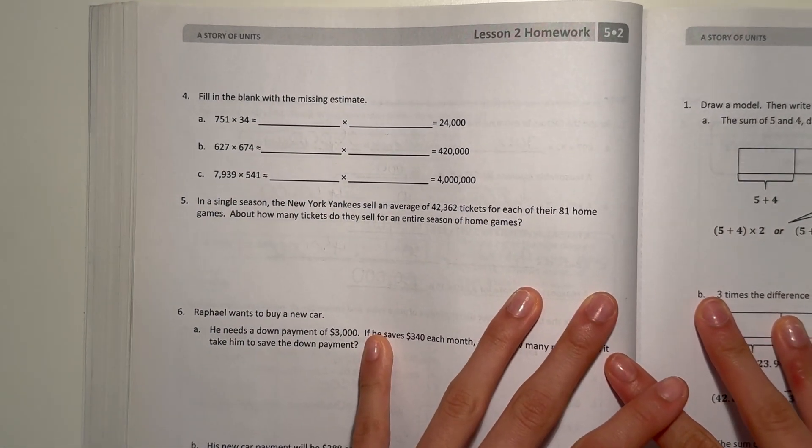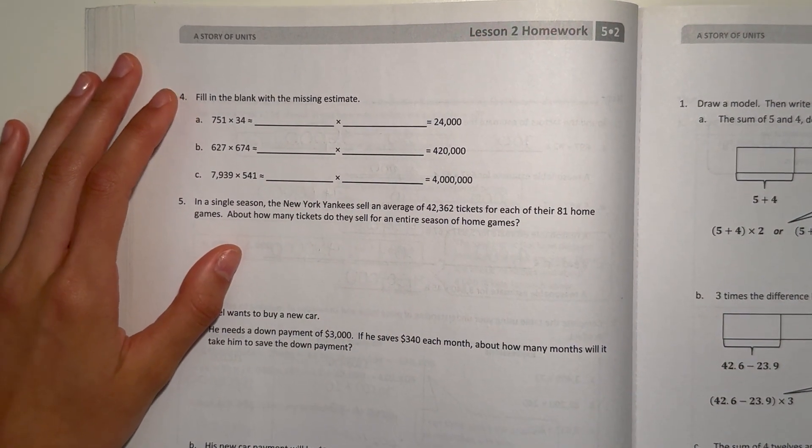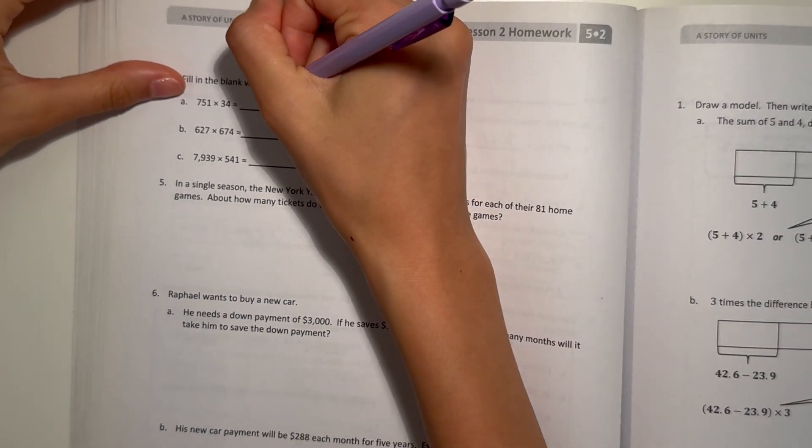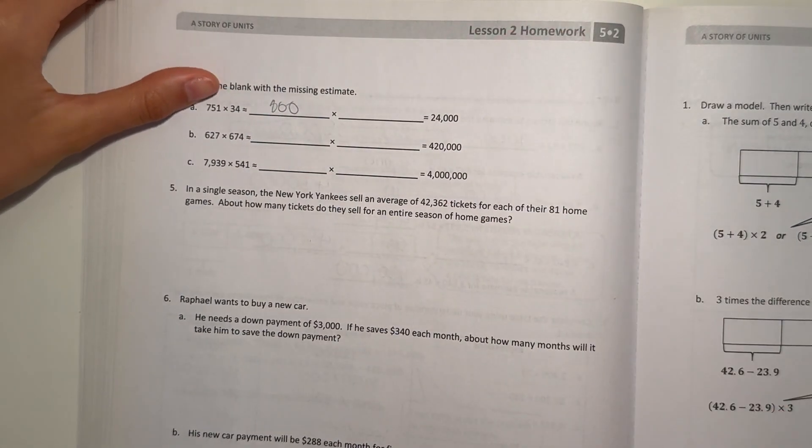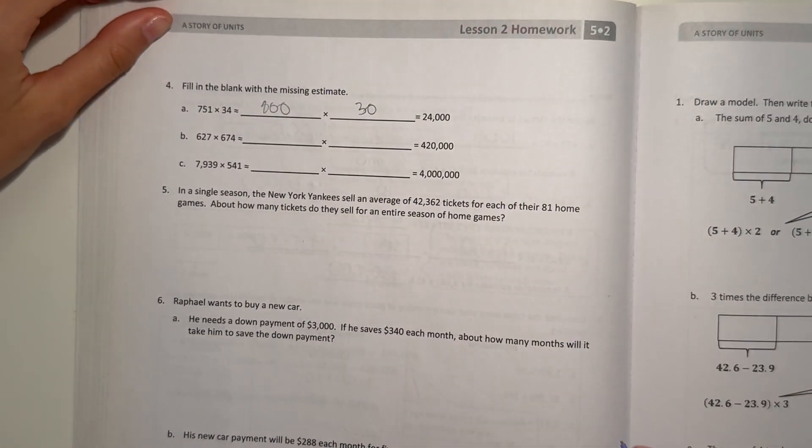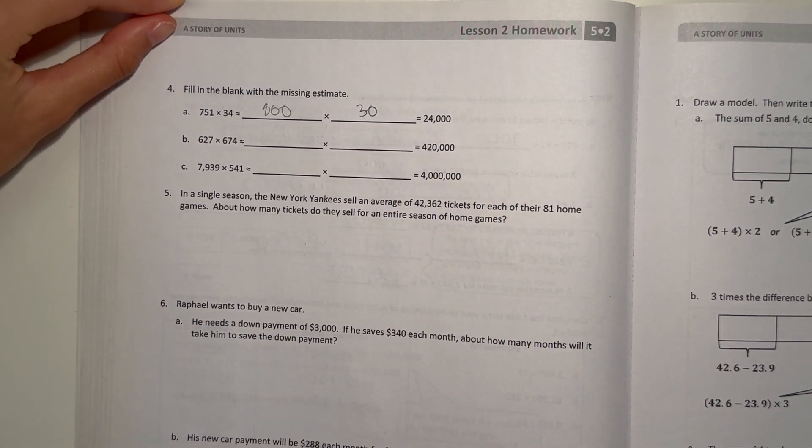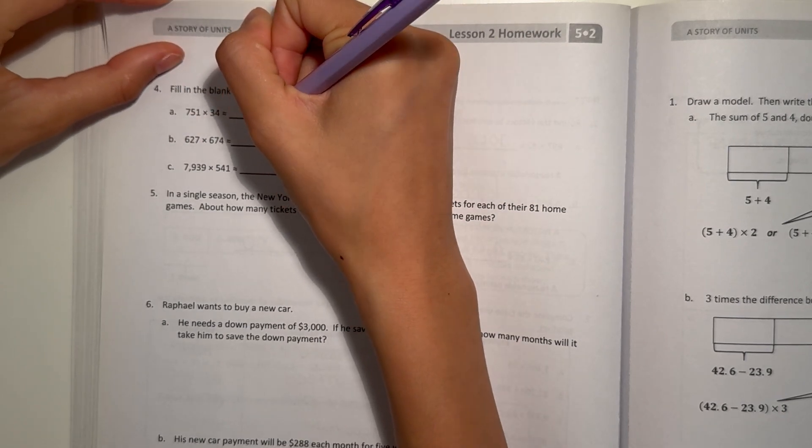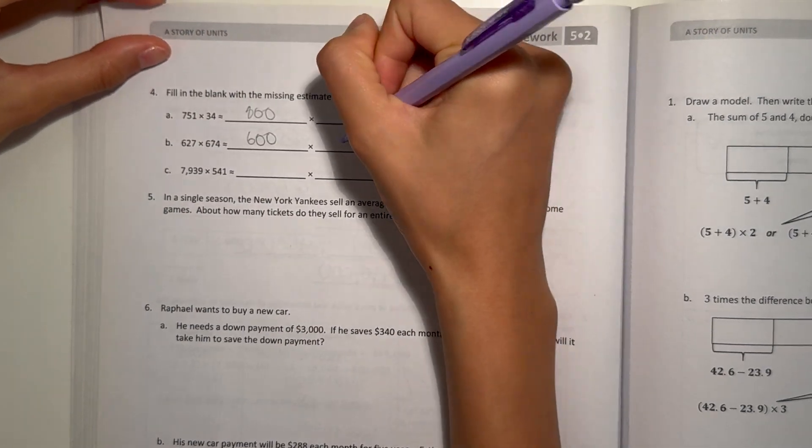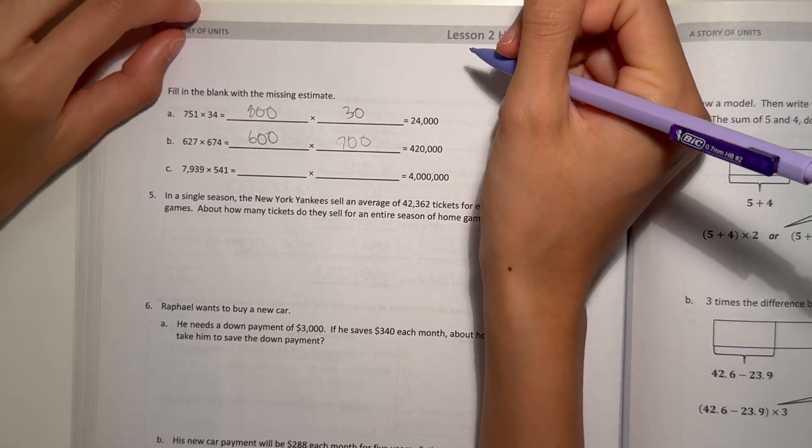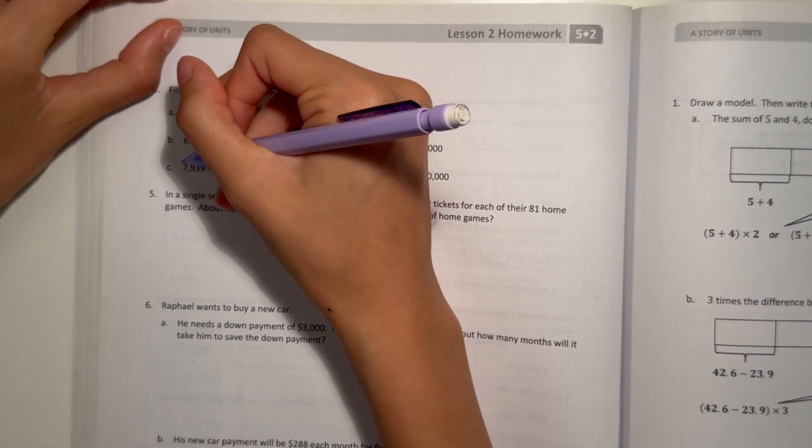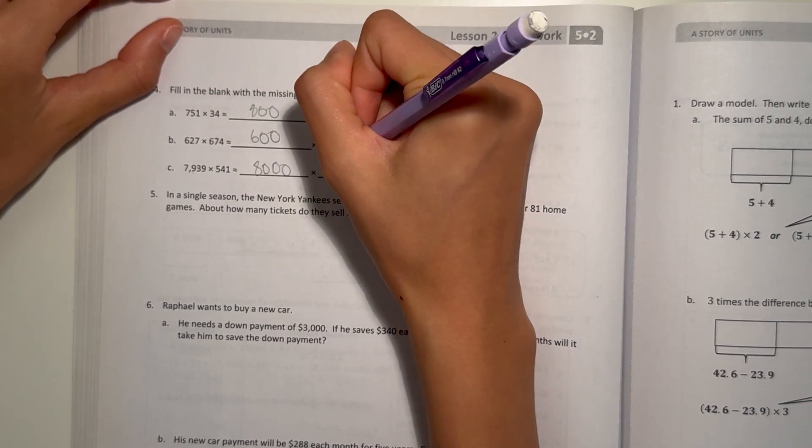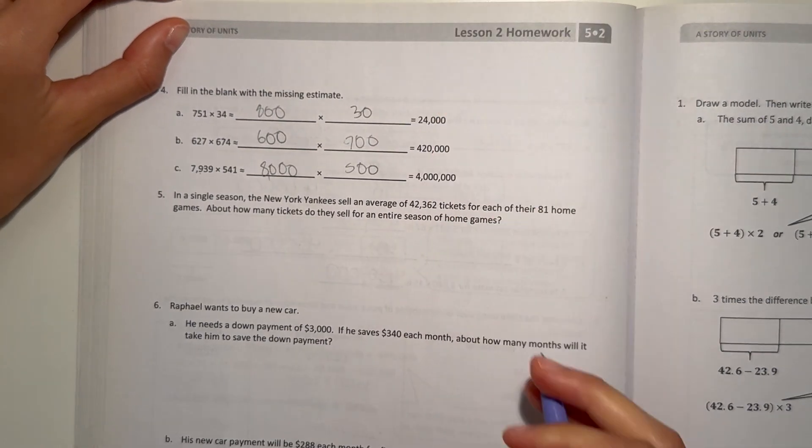Number 4 says, fill in the blank with the missing estimate. A, 751, we round up to 800, times 34, round down to 30. And that's how they got that answer. And now 627 to the nearest hundreds would round down to 600 × 700. That's how they got 420,000. And C, 7,939 to the nearest thousand would be 8,000 × 500. That's how they got 4 million.